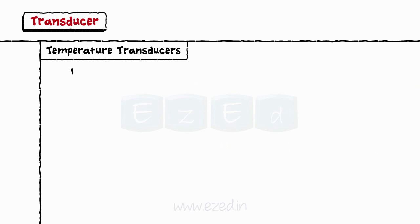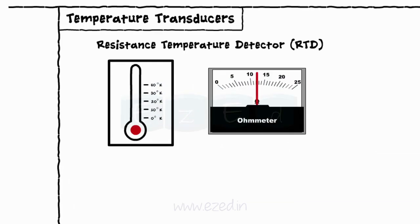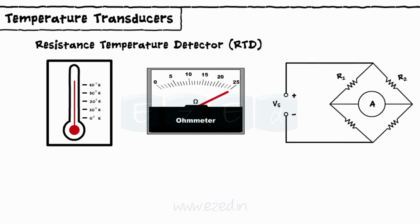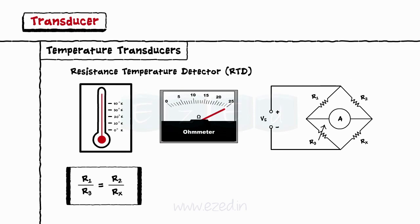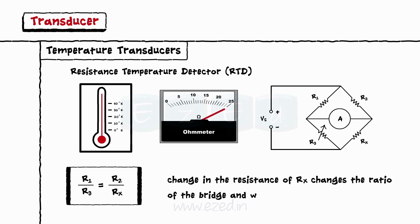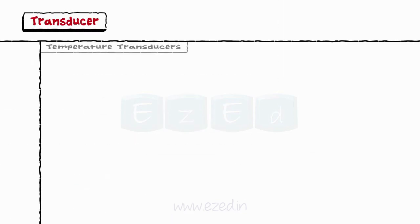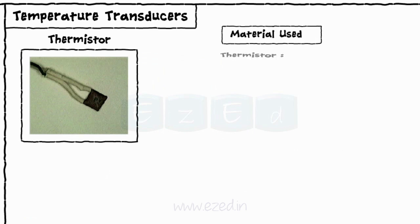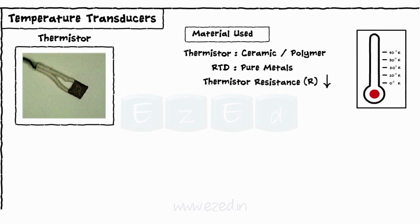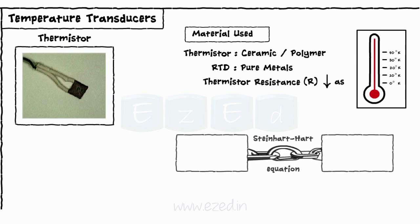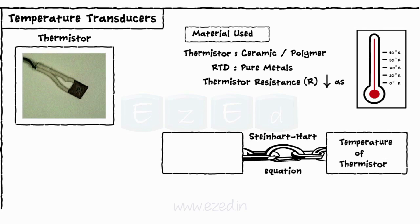The next temperature transducer is a resistance temperature detector or RTD. RTD is a sensor whose resistance changes with temperature. Resistances R1 and R2 are fixed, R3 is variable, and RX is the RTD. The ratio of the bridge becomes R1 upon R3 equals R2 upon RX. Thus, a change in the resistance of RX changes the ratio of the bridge and we get current in the circuit. Thermistors differ from RTDs — the material used in a thermistor is generally ceramic or polymer, while RTDs use pure metals. Thermistors are made of semiconductor materials, so the resistance of a thermistor decreases with increase in temperature. Using the Steinhart-Hart equation, we can calculate the temperature of the thermistor from the measured resistance.